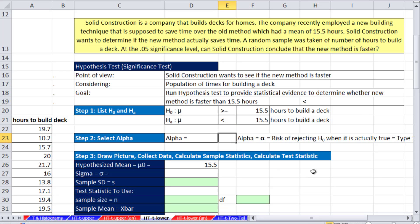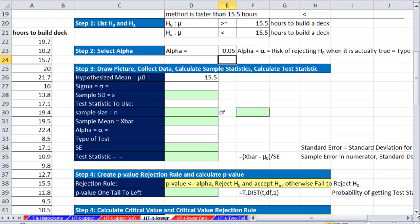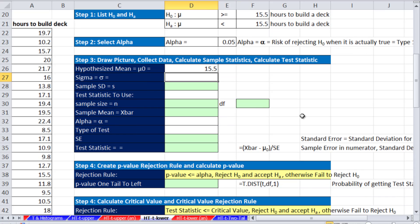Our alpha, that's the risk of rejecting the null when it was true, 0.05. Let's come down here and do some calculations. Step three. Sigma, we don't know that. So in the test statistic, we are going to use T, not Z. We'll go ahead and calculate. Here's our data over here.